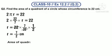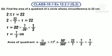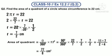Next, find the area of the quadrant. Theta = 90°. Using the formula: 90/360 × 22/7 × (7/2)². Substituting 7/2 × 7/2, and simplifying, we get 11 × 7 / (2 × 4) = 77/8 cm².